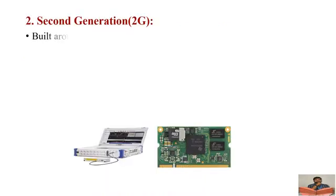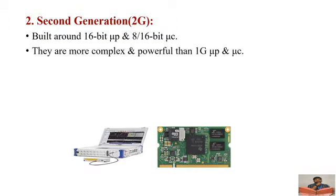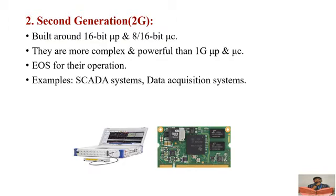Second generation embedded systems are built around 16-bit microprocessors and 16-bit microcontrollers. These are a bit more complex and powerful compared to first generation. An embedded operating system is used for their operation. Examples include SCADA systems and data acquisition systems, such as digital CROs or digital multimeters used in electronics laboratories.